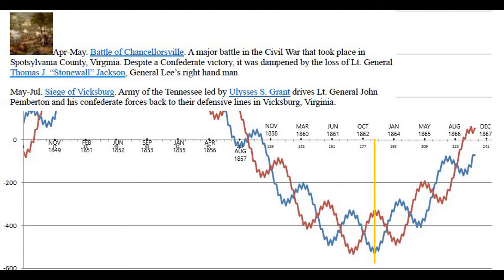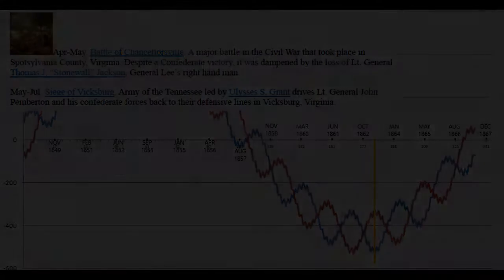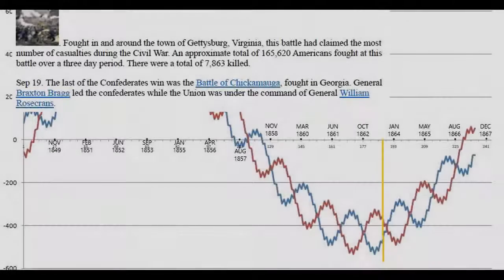From May to July 1863, the Siege of Vicksburg: Ulysses S. Grant's Army of the Tennessee drives Lieutenant General John Pemberton's Confederate forces back to their defensive lines in Vicksburg. The Battle of Gettysburg, fought in and around the town of Gettysburg, had the most casualties of the entire Civil War — approximately 165,620 Americans fought over three days with 7,863 killed. On September 19th, the last Confederate victory was the Battle of Chickamauga in Georgia, with General Braxton Bragg commanding the Confederates.